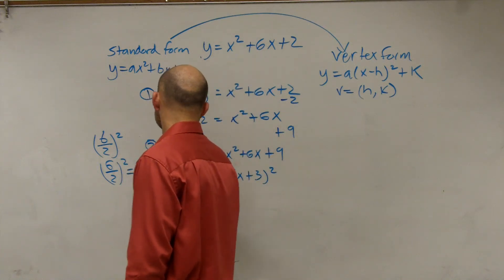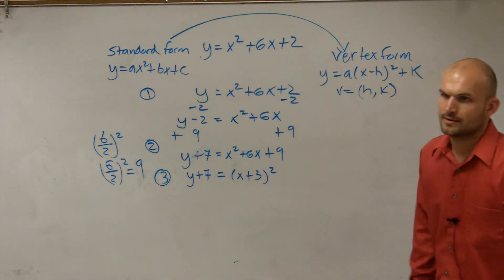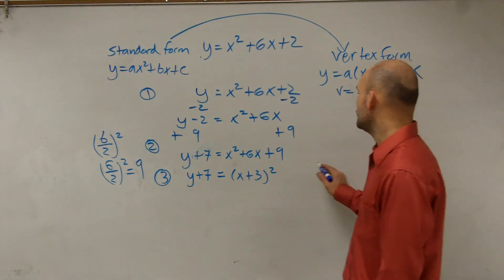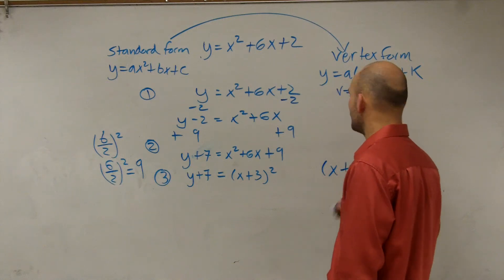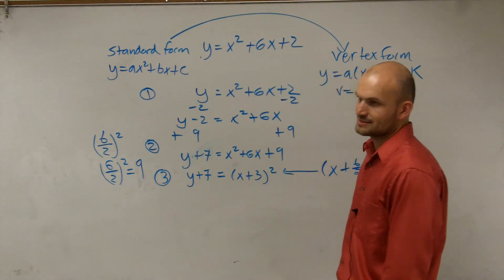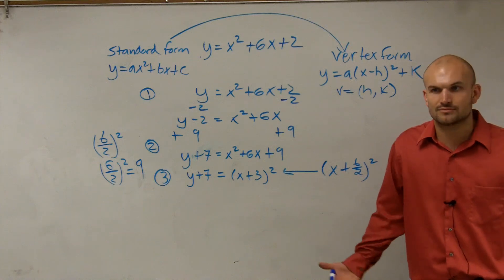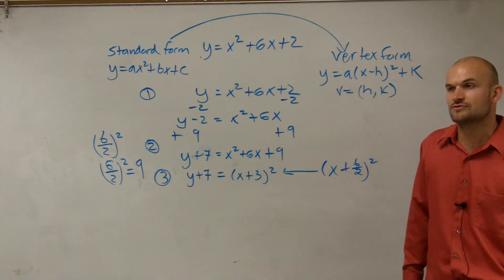and what you're going to get is y plus 7 equals x plus 3 squared, which we call step number 3. Now, if you don't remember how do you factor this, you can always just write it as x plus b divided by 2 squared. That's where I got that. I also got it from factoring, which is our practice on factoring, which I know a lot of you have trouble with.